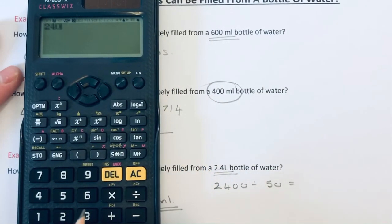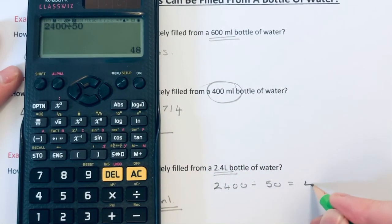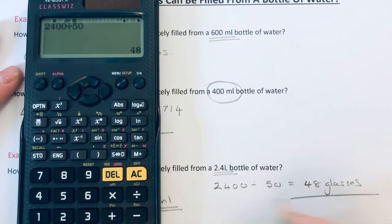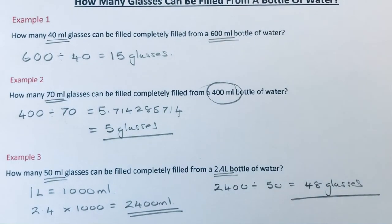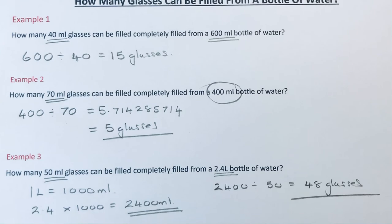So 2,400 divided by 50 gives an answer of 48 glasses. I hope you liked this video. If you did, like and subscribe to my channel. Thanks for watching, bye bye!